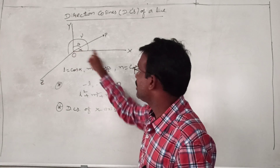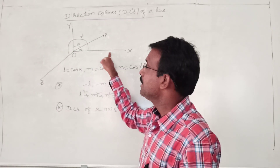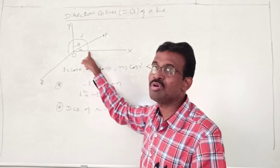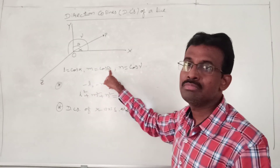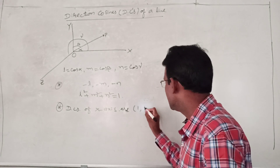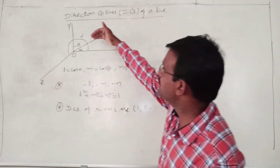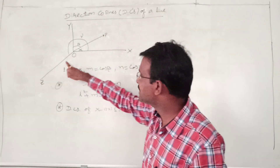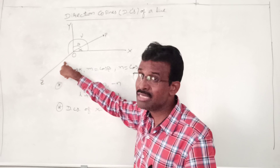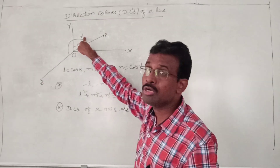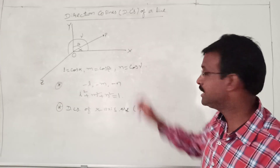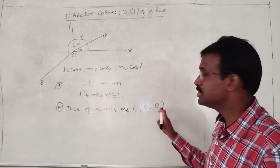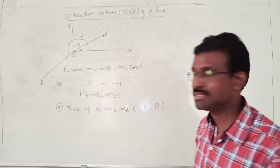Whenever OP falls on the X axis, beta is the angle between the X and Y axes, which is 90 degrees, so cos 90 equals 0. Similarly, the angle between the X axis and the Z axis is 90 degrees, so gamma is 90 degrees and cos 90 equals 0. Therefore, 1, 0, 0 are the direction cosines of the X axis.